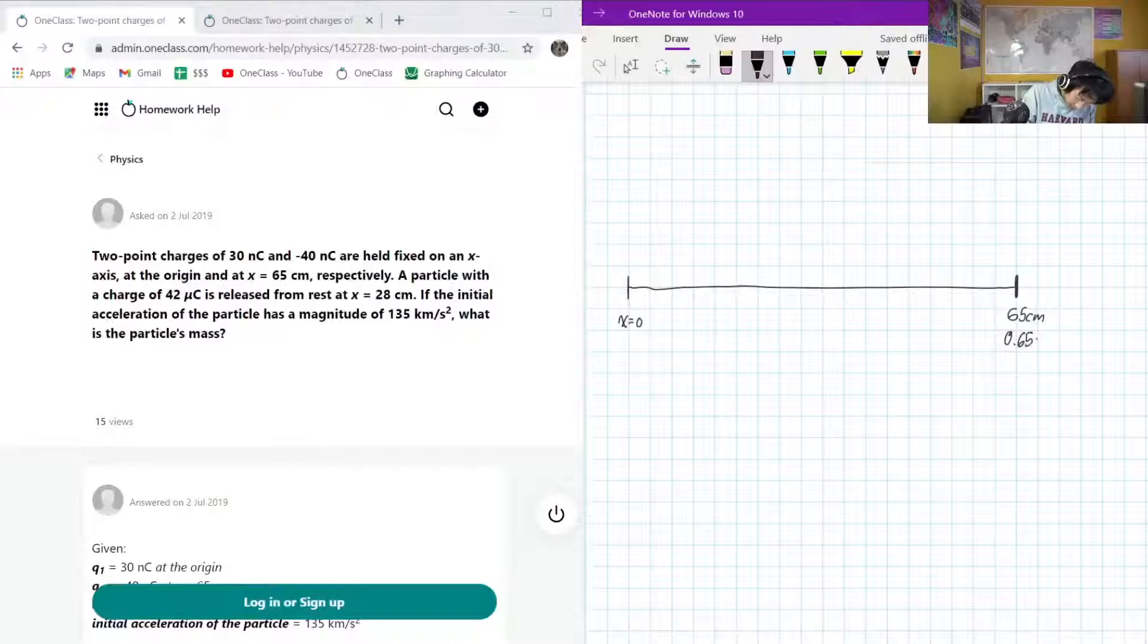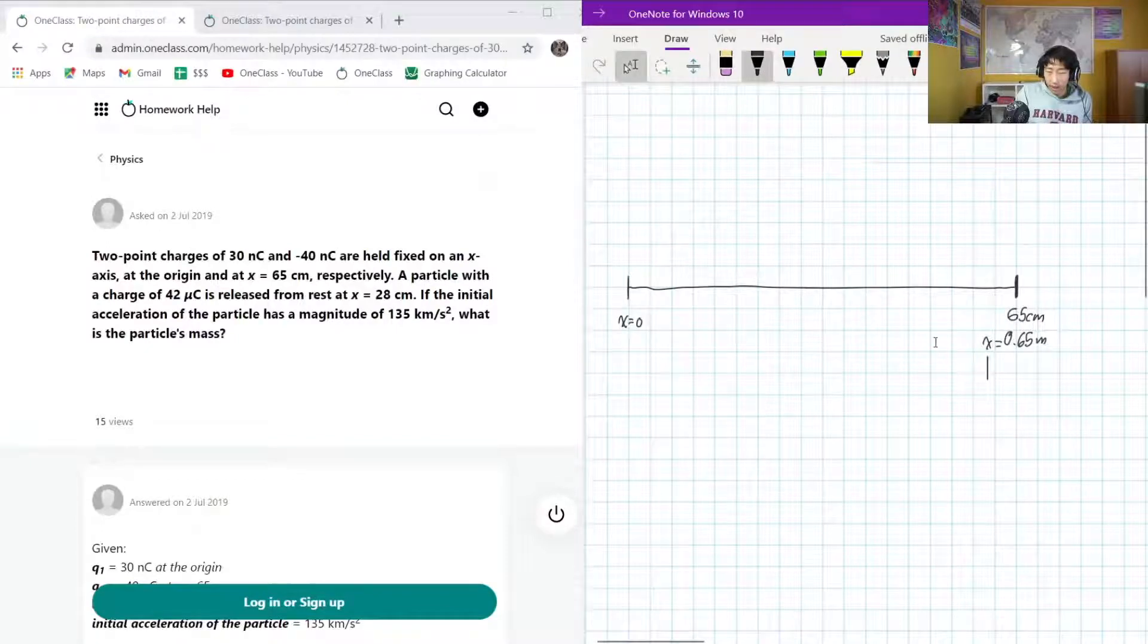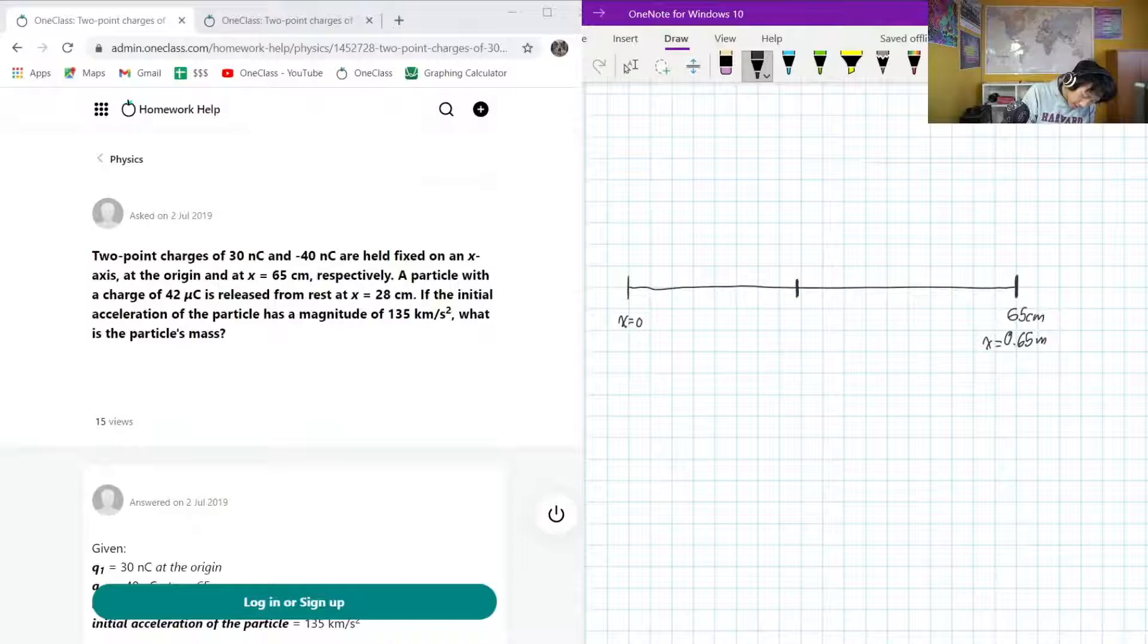So 0.65 meters is another way to write that out. In my opinion, it's a little bit safer to write our distances in base SI, so convert your centimeters into regular meters, and we know that our other location of interest is 28 centimeters. That's about halfway, slightly closer to the zero. So let's call that 0.28 meters.